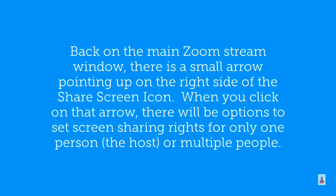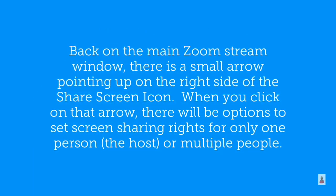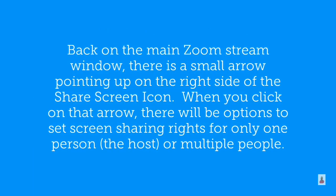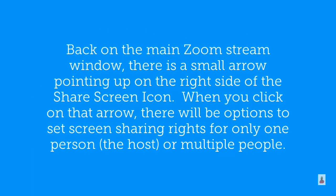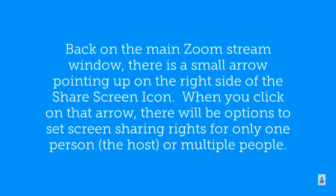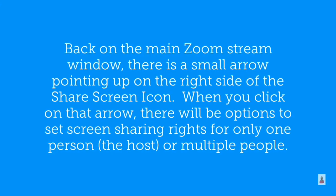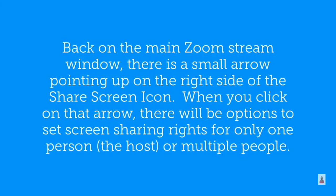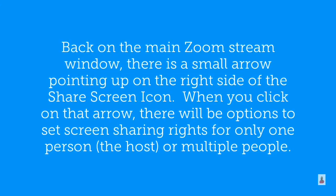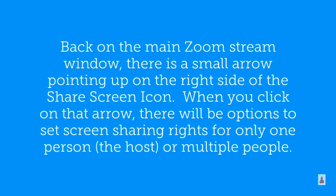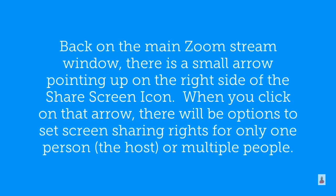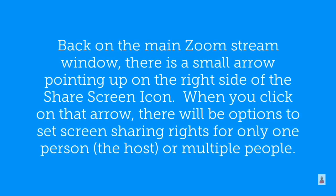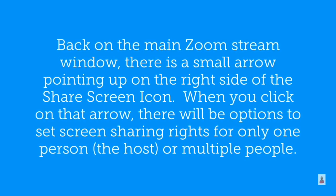Back on the main Zoom stream window, there's a small arrow pointing up on the right side of the share screen icon. When you click on that arrow, there will be options to set screen sharing rights for only one person — the host — or for multiple people.